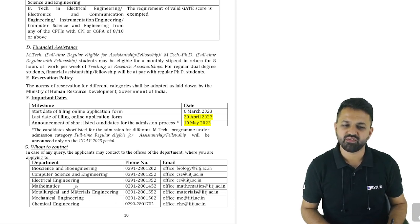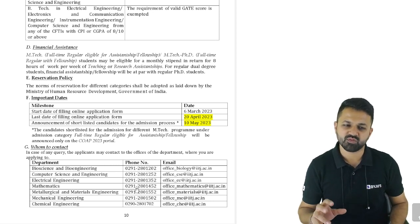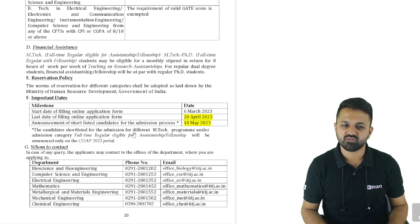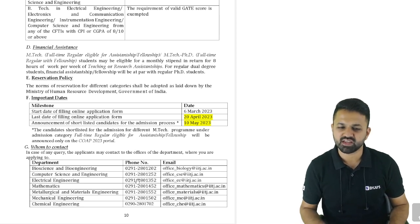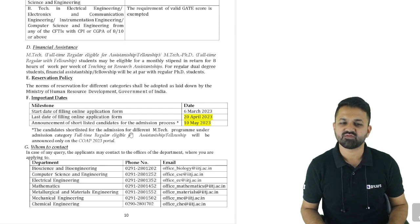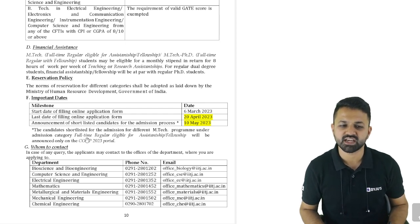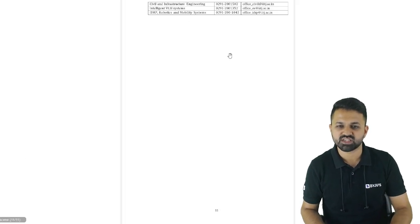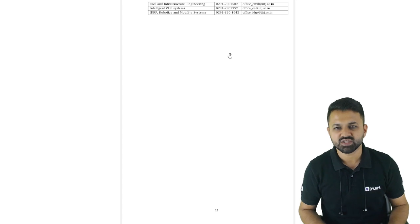There are official email IDs provided — if you have any query you can call or email them. If you filled in an incorrect form or have any doubt during form filling, you can ask them directly about the procedure. You must visit the COAP portal regularly because results will be announced there. Candidates shortlisted for M-TECH programs under admission categories like full-time regular, assistantship, or fellowship will be announced only on the COAP portal.